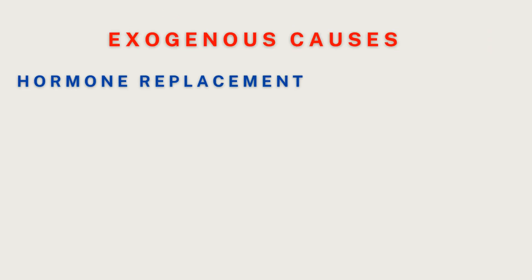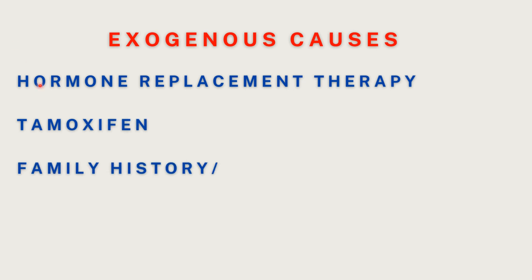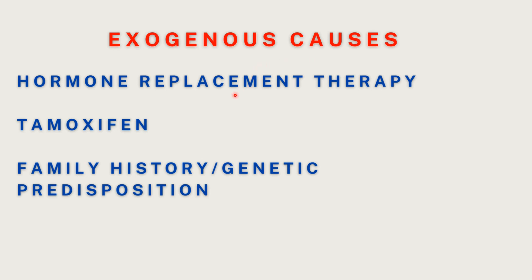Exogenous causes of unopposed or excessive estrogen exposure include hormone replacement therapy, which increases estrogen exposure in menopausal women. Another is tamoxifen, a medication used to treat breast cancer and a selective estrogen receptor modulator. Tamoxifen has an anti-estrogenic effect in breast tissue but has estrogen agonistic action in uterine tissues, enhancing proliferation of the endometrium and leading to endometrial hyperplasia and cancer. Family history or genetic predisposition also plays a role.